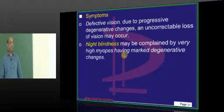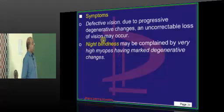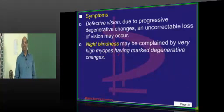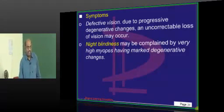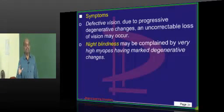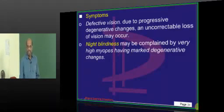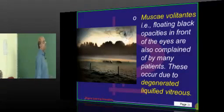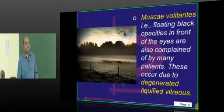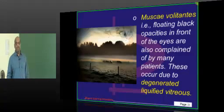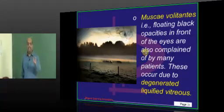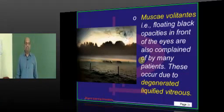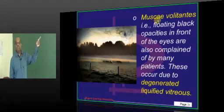The presenting features of pathological myopia include defective vision. There can also be night blindness — pathological myopia is often associated with degenerative changes in the retina, affecting the rods and cones, the photoreceptors, hence night blindness. Muscae volitantes is another classical feature — floating black opacities in front of the eyes — a classical feature of liquefied vitreous in pathological myopia.